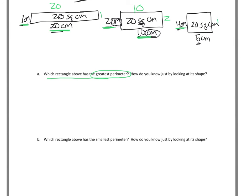So the last one, 4 and then 5. So your measurements are in. You just got to find the perimeter. Figure out which one is the greatest. And then how do you know just by looking at its shape based on your drawing. And that's going to be an interpretation of what you believe. And then at the bottom for B, you'll say which rectangle above has the smallest perimeter? How do you know just by looking at the shape?